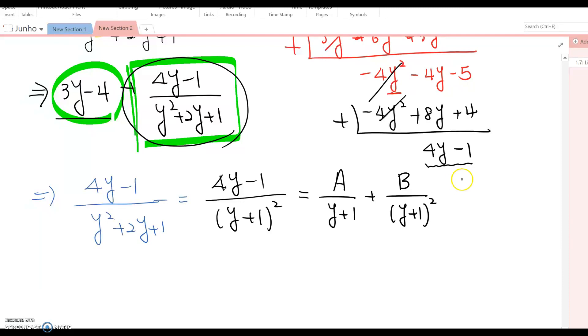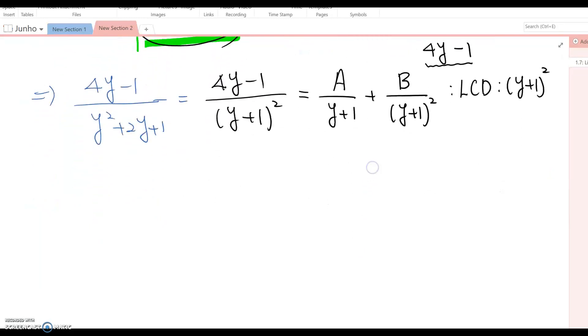We multiply by the LCD, which is (y + 1)². This gives 4y - 1 = A(y + 1) + B. Since B is a constant, if we plug in y = -1, the first term becomes 0.